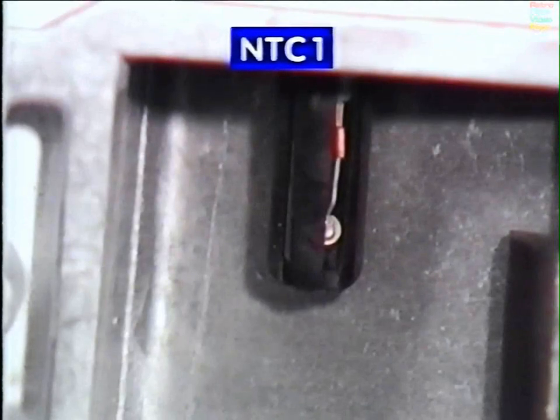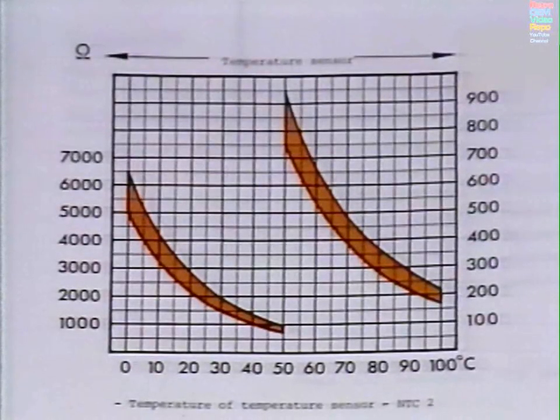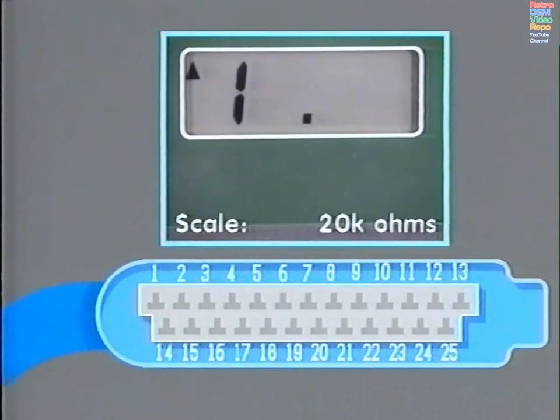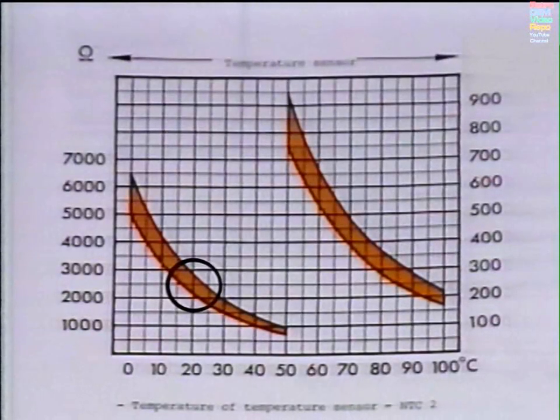NTC1. This is a very accurate and delicate sensor. So use the graph as we did when we checked the NTC2 temperature sensor. With the meter on the 20 kilo ohm scale, place the black negative wire to pin 6 and the red positive wire to pin 9. Note the ambient air temperature and the corresponding ohms reading on the scale. They should match.